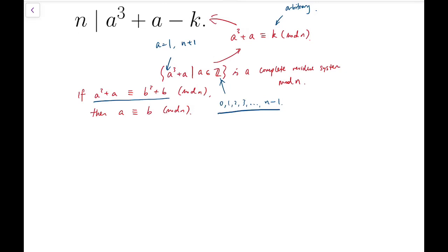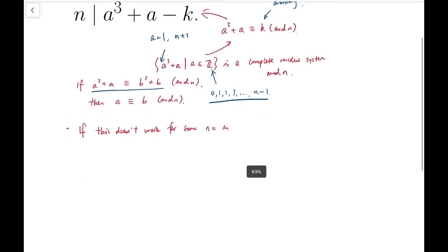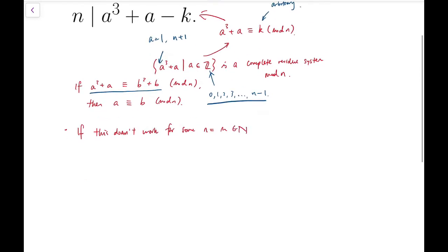And apart from considering this equation, there's actually another fact that I have to consider is that if this doesn't work for some n equals to m, that is natural numbers, then it will not work for all multiples of m, say 2m, 3m, and so on.